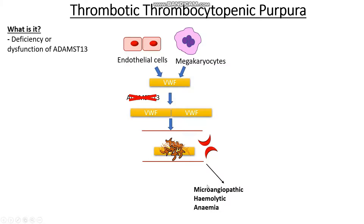Microangiopathic refers to the fact that it affects the small blood vessels, hemolytic refers to the fact that we're splitting up the red blood cells, and anemia refers to the fact that we have reduced red cells in our blood. Now because we are clotting so much, we're actually tending to use up quite a lot of our platelets in these clots that we form, so therefore we tend to see a thrombocytopenia.